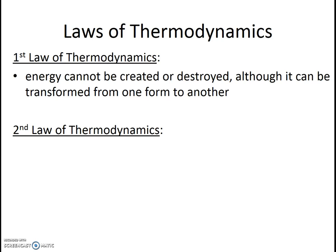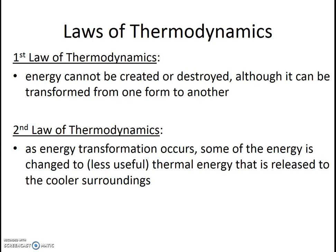So energy can change form. Now interestingly, when energy does change form, some useful energy is dissipated as heat — thermal energy. And this is the second law of thermodynamics: as energy is transformed from one form to another, some useful energy is dissipated as heat and released to the cooler surroundings. So no energy transformation is ever 100% efficient. There is always some energy that is dissipated as heat and unusable. A result of this is that organisms always need a constant input of energy, and another result is that food chains are limited in length, because as energy is changing form from one step of the food chain to another, some of this energy is lost.